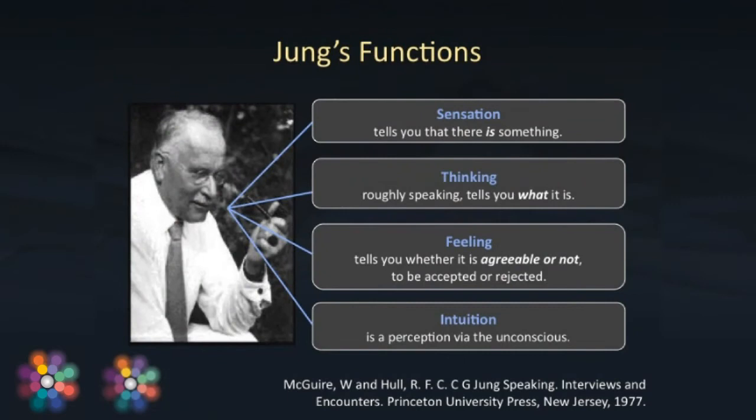So let's call upon the great Dr. Jung to identify what all the fuss is about. There is a quite simple explanation of these terms, and it shows at the same time how I arrived at such a typology. Namely, sensation tells you that there is something. Thinking, roughly speaking, tells you what it is. Feeling tells you whether it is agreeable or not — to be accepted or rejected. And intuition? There is a difficulty. Intuition is a perception by ways or means of the unconscious. That is as near as I can get.